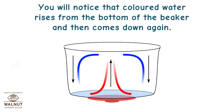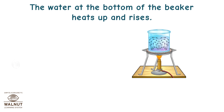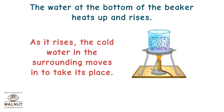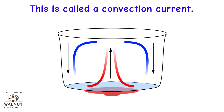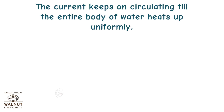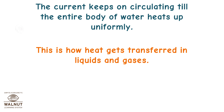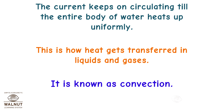You will notice that colored water rises from the bottom of the beaker and then comes down again. The water at the bottom heats up and rises. As it rises, the cold water in the surrounding moves in to take its place. Then that too heats up and rises. This is called a convection current. The current keeps circulating until the entire body of water heats up uniformly. This is how heat gets transferred in liquids and gases — it is known as convection.